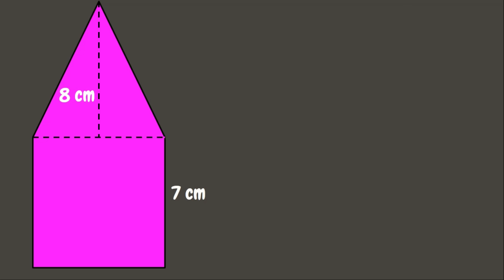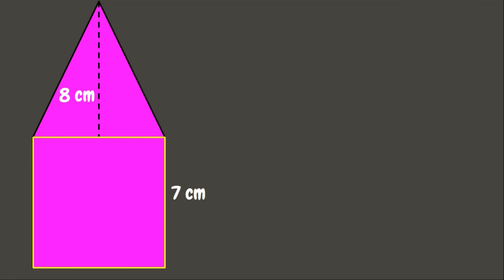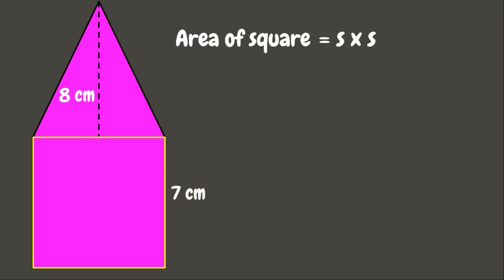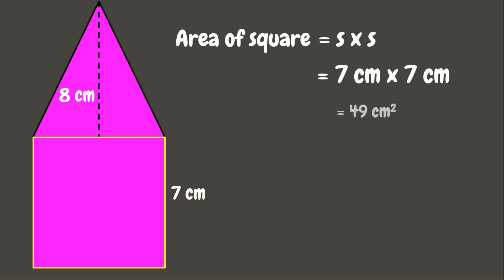Let's first get the area of the square. The formula for the area of the square is side times side. Here the side of the square measures 7 centimeters. So we multiply 7 centimeters by 7 centimeters, which gives us 49 square centimeters — that is the area of the square.